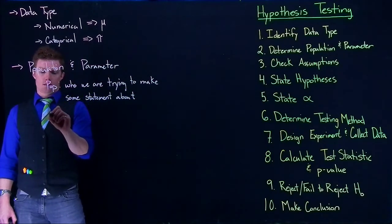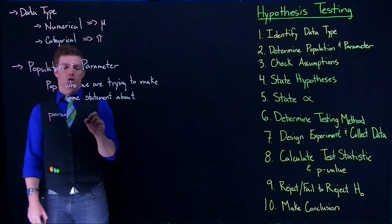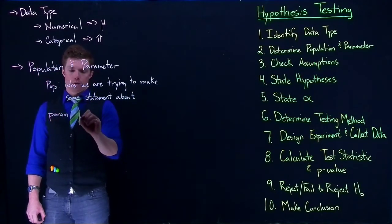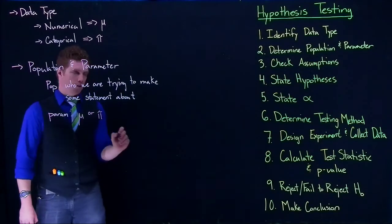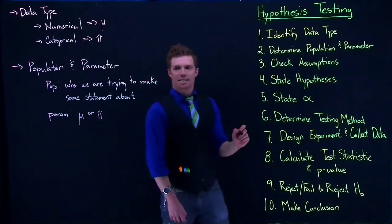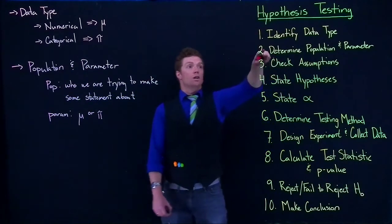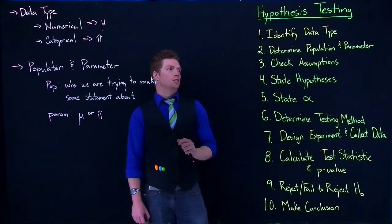Parameters, for this class at least, we are just interested in mu and pi for right now. We'll introduce some other ideas later on, but we're going to start off with this. So those are our first two steps: identify our data type and determine our population and parameter.